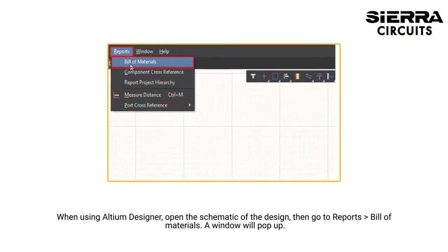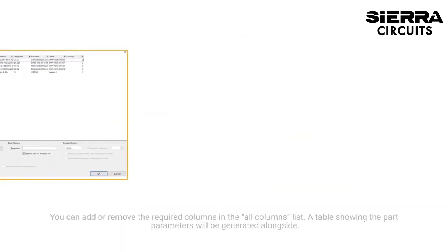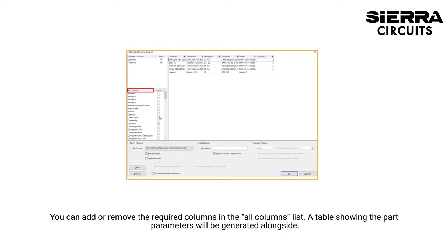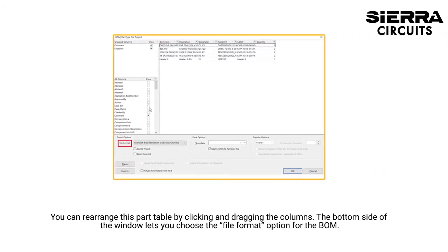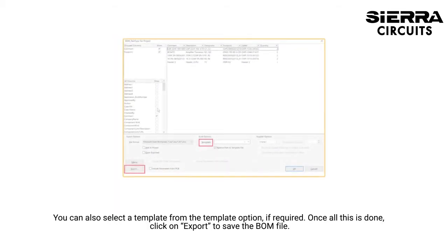When using Altium Designer, open the schematic of the design, then go to Reports, Bill of Materials. A window will pop up. You can add or remove the required columns in the All Columns list. A table showing the part parameters will be generated alongside. You can rearrange this part table by clicking and dragging the columns.